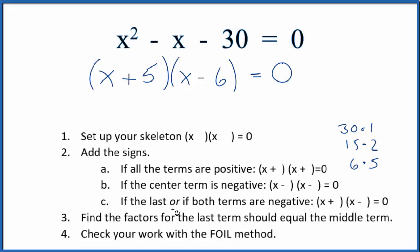Let's check that, though. We can use the FOIL method. We could have the first term. That's the x times x. That's x squared. x times minus 6. That's minus 6x. Inside terms, 5 times x. So, plus 5x. And then, 5 times minus 6. That's minus 30. That equals 0.